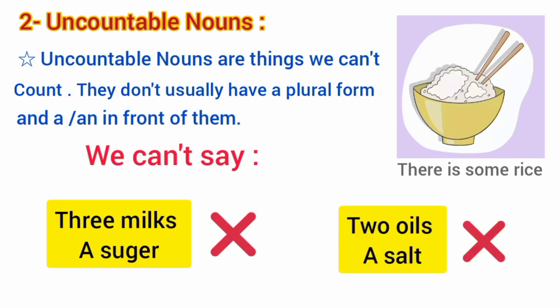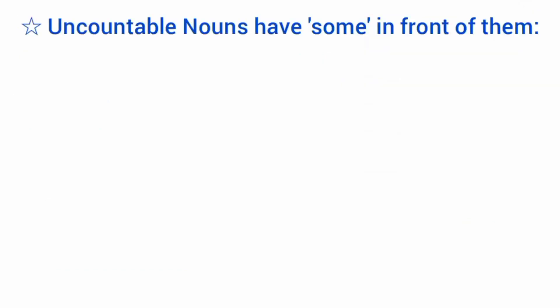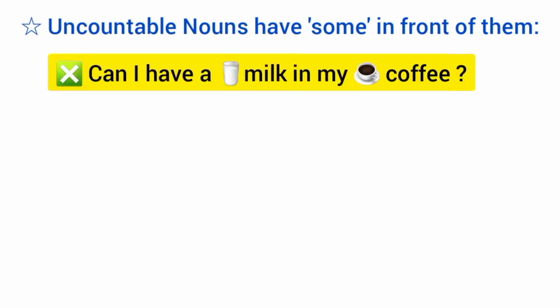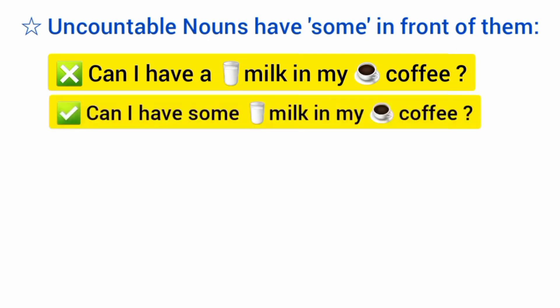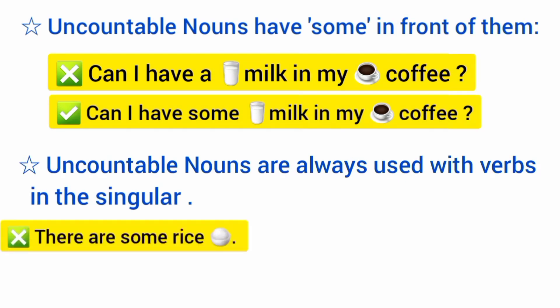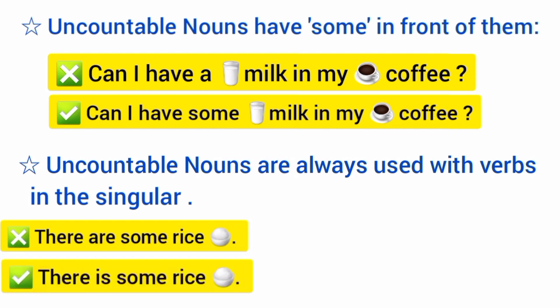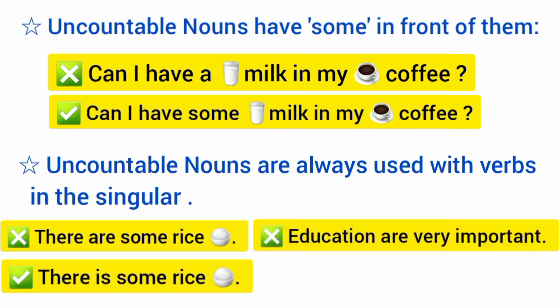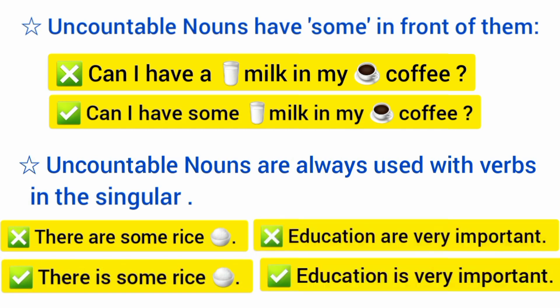We can't say 'three milks,' 'a sugar,' 'two oils,' or 'a salt' — this is wrong. Uncountable nouns have 'some' in front of them. We can't say 'Can I have a milk in my coffee?' but we say 'Can I have some milk in my coffee?' Also, uncountable nouns are always used with verbs in the singular. We can't say 'there are some rice,' but we say 'there is some rice.' We can't say 'education are very important,' but we say 'education is very important.'